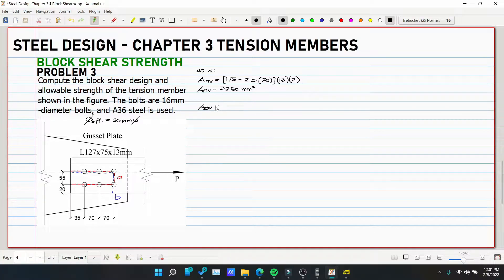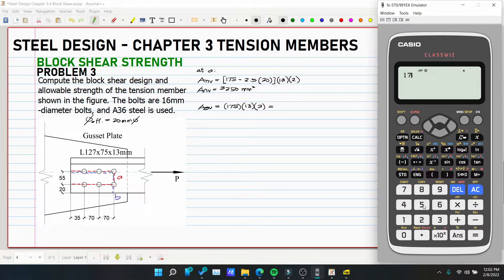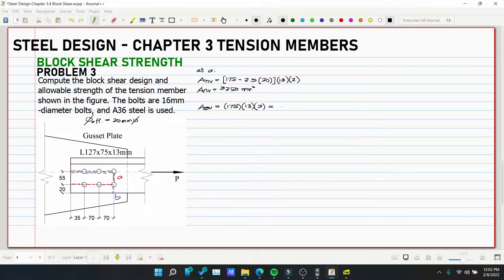So now, let's solve for AGV. So 175 multiplied by 13 multiplied by 2. So 4550. This is actually similar to our problem number 2.